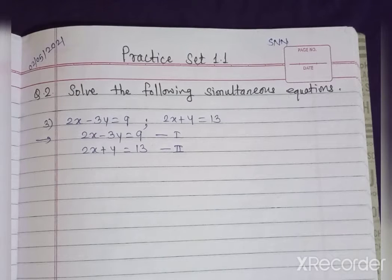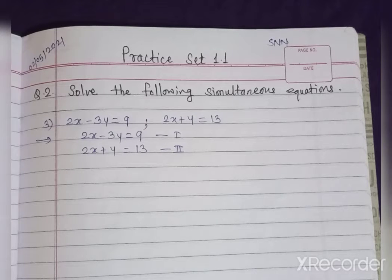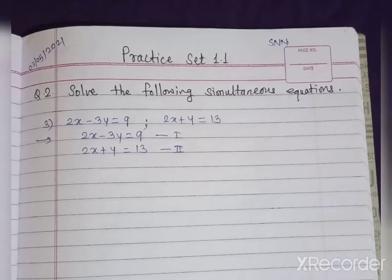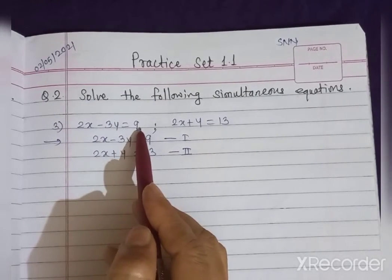Hello students. Now we are going to study Practice Set 1.1 on page number 4 of your textbook. Question 1 is an activity — I think it is easy to solve, so solve it yourself. Now question 2: solve the following simultaneous equations. The first and second sums are very simple; I am going to discuss the third sum.